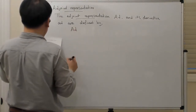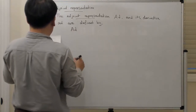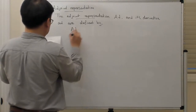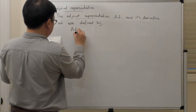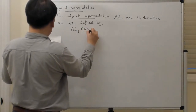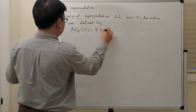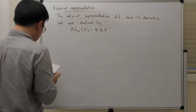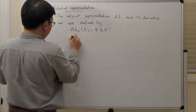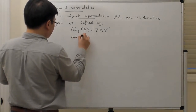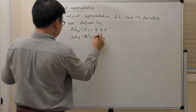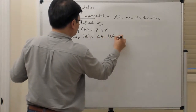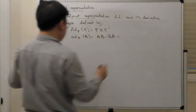Big Ad — let's say P acting on A is just given by P A P inverse, so it's just the conjugation by P. And then little ad A acting on B is equal to A B minus B A, so it's just the matrix commutator.